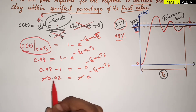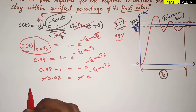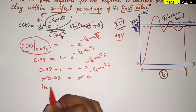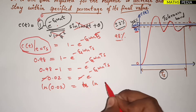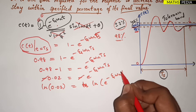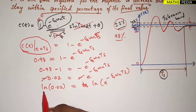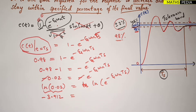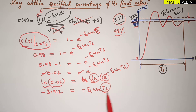The minus signs cancel, leaving 0.02 = e^(−ζωn·Ts). To isolate Ts, we take the natural log of both sides: ln(0.02) = ln(e^(−ζωn·Ts)). The natural log and e cancel on the right side. ln(0.02) equals −3.912 (you can verify with a calculator), so: −3.912 = −ζωn·Ts.